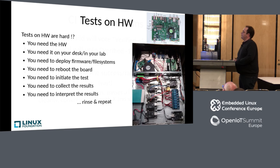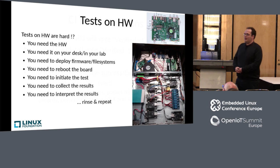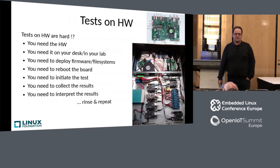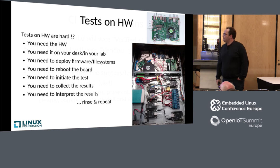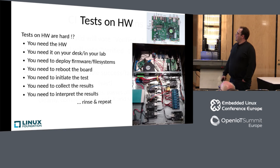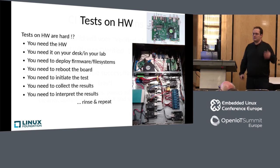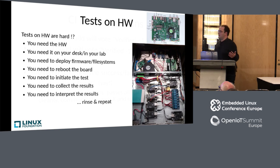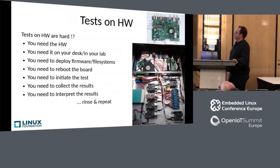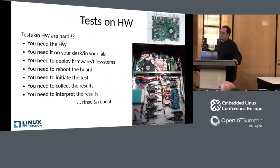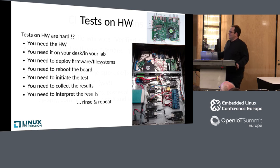Tests on hardware — are they hard? You need the hardware. For our community boards, that's relatively easy — you can get a Raspberry Pi for a couple of bucks or a BeagleBone. For hardware in automotive, it might be a little harder. Usually, you need it on your desk and in your lab, able to juggle SD cards. That's quite time-consuming. You need to deploy the firmware, reboot the board, run the tests, collect the results, interpret the results, and then rinse and repeat for the next board or next change.